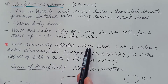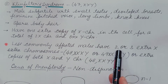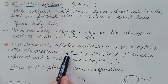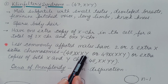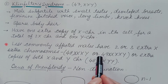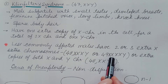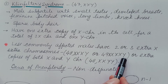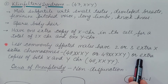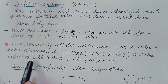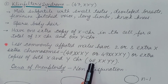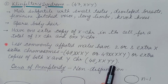Less commonly, affected males may have two or three extra X chromosomes. For example, a total of 48 chromosomes with 3X and 1Y (two extra X chromosomes), or 49 total chromosomes with 4X and 1Y (three extra X chromosomes). They may also have extra copies of both X and Y chromosomes, for example 48,XXYY.